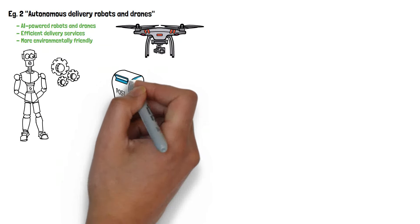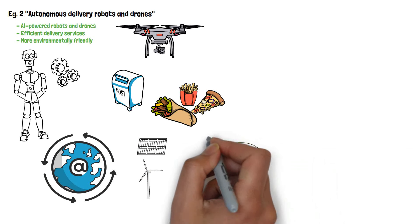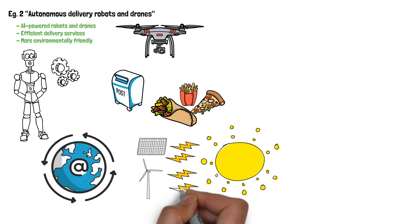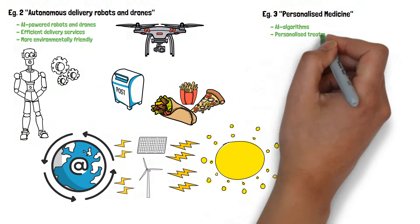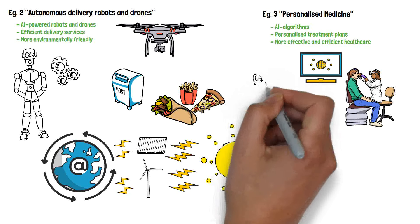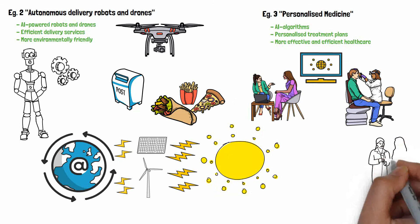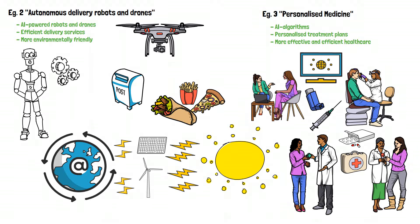Maybe autonomous delivery robots and drones. These AI-powered robots and drones could revolutionize the delivery industry by making deliveries faster, more efficient, and more environmentally friendly. Another example is personalized medicine. AI algorithms could analyze a patient's genetic data and medical history to develop personalized treatment plans leading to more effective and efficient healthcare.